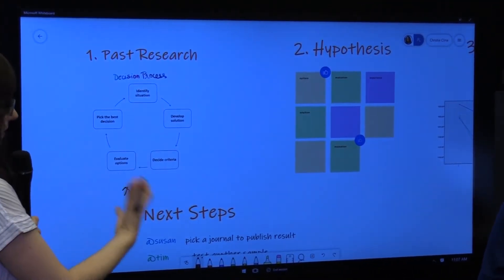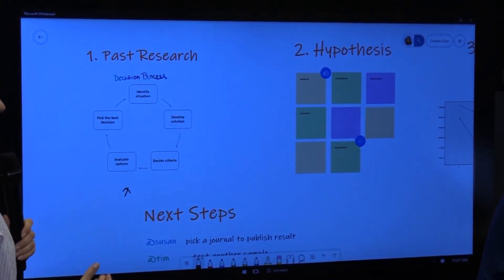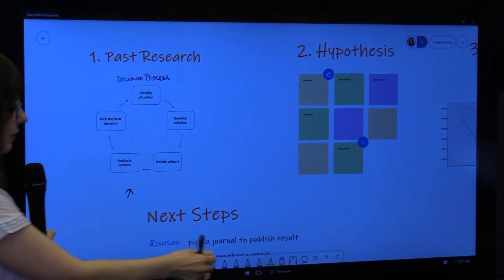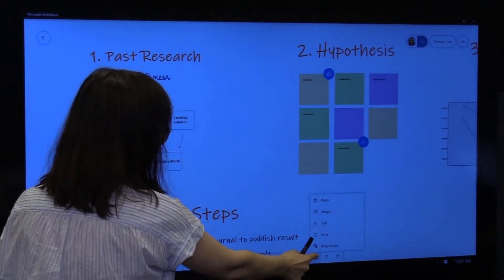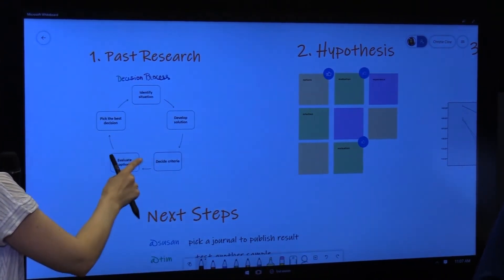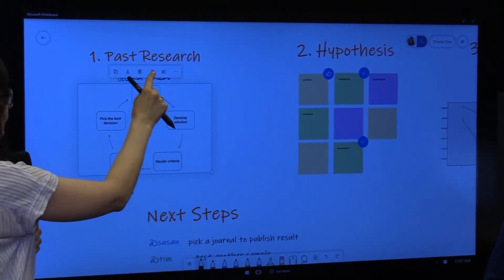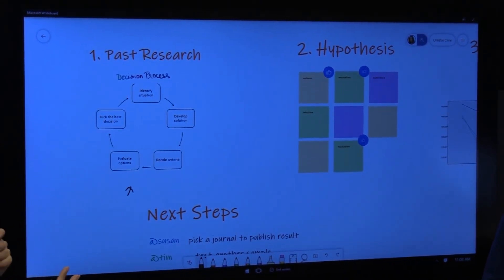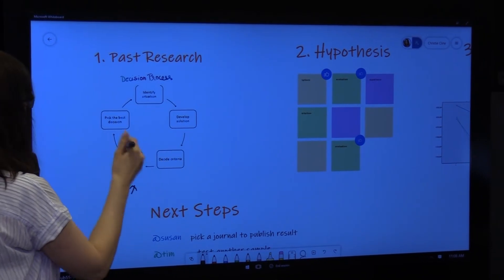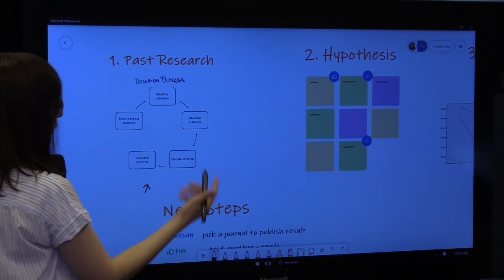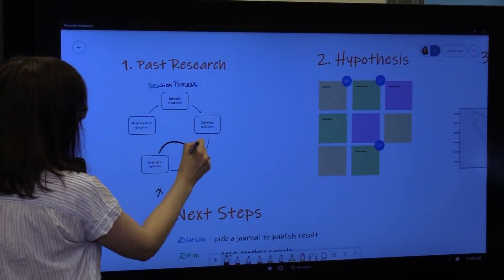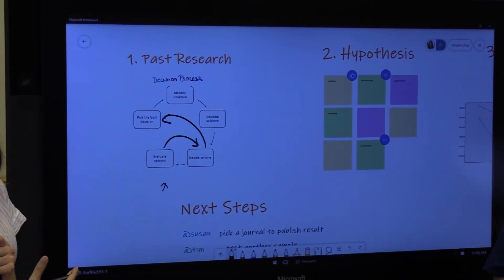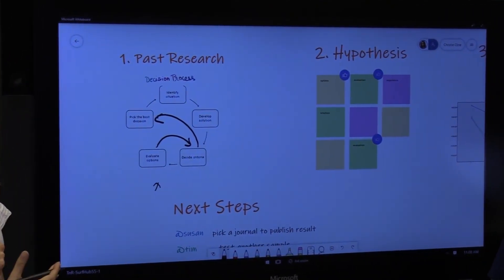So the whiteboard has, of course, ink like a physical whiteboard, but it also has sticky notes, lightweight reactions, and a bunch of other digital assets that you can use. We're going to take this image and use the wand to convert this directly into digital ink. This is awesome. This is now ink. Now we can erase and make changes. If we've realized that the decision making process actually looks a little bit different, we can collaborate on this together directly in the whiteboard.